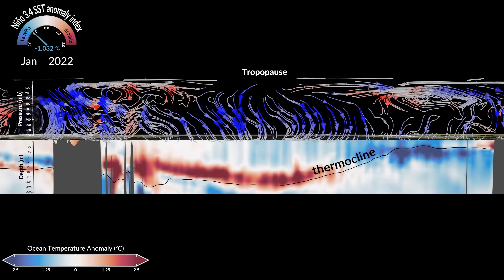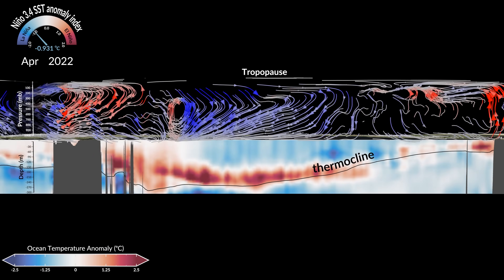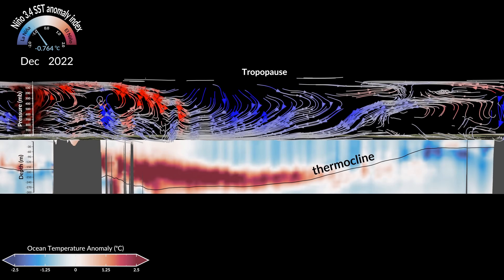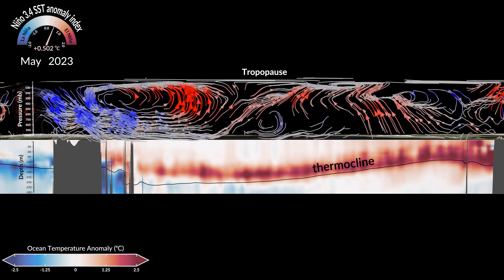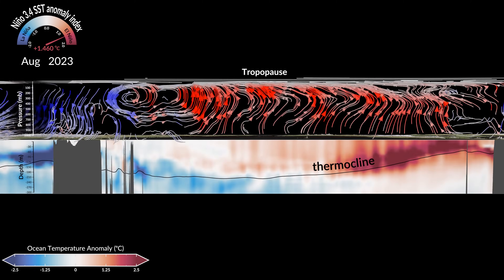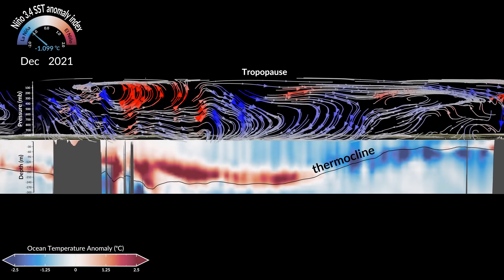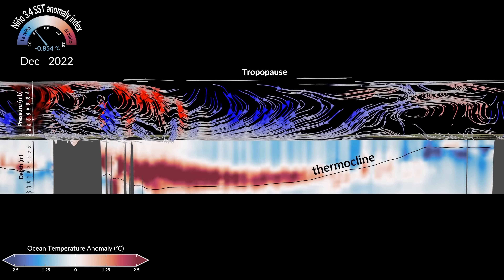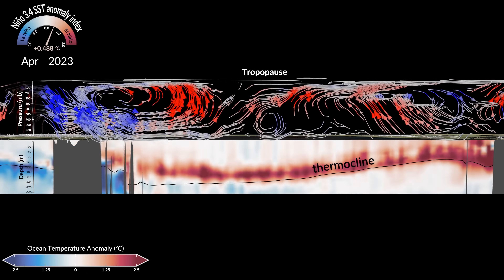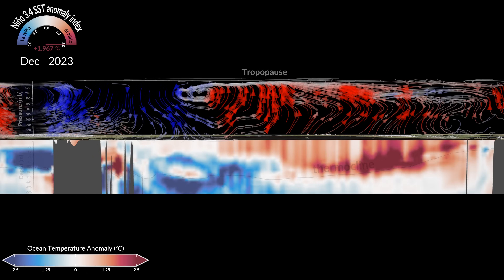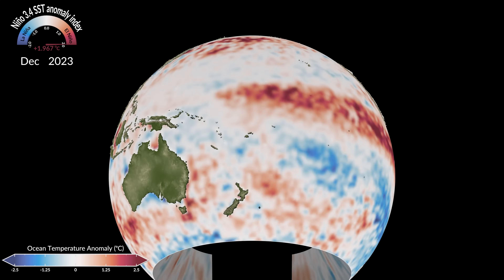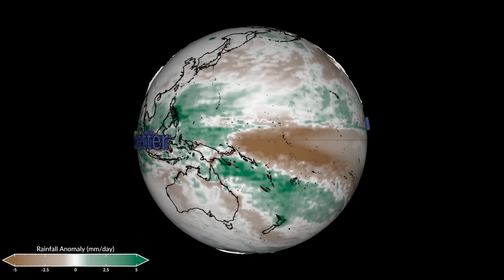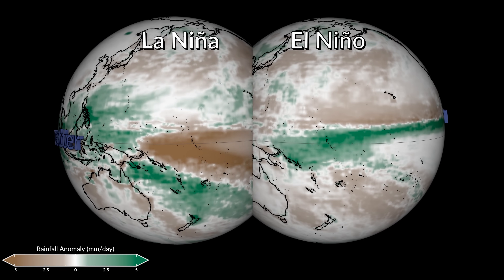During La Niña, the warm waters of the West Pacific add extra heat to the air, resulting in rising motion where there are more clouds and rainfall. Starting March 2023, this cycle breaks down. The surface trade winds weaken, the warm water anomalies spread eastward, and therefore the convective rising branch of the Walker circulation shifts to the Central and East Pacific, and so affects the global weather by altering the rainfall pattern.